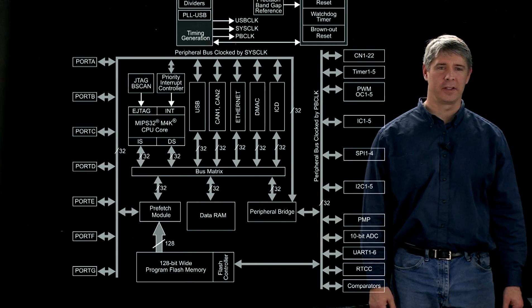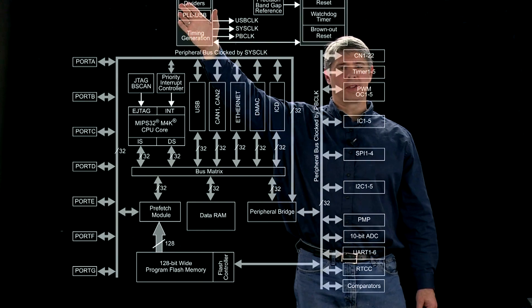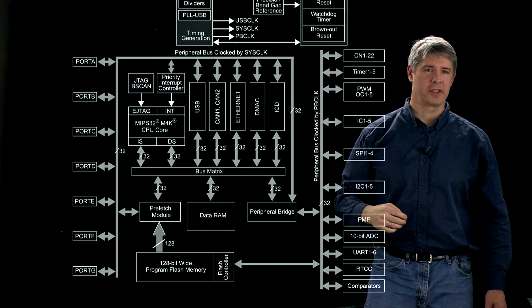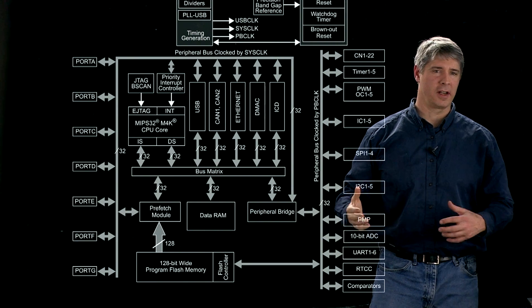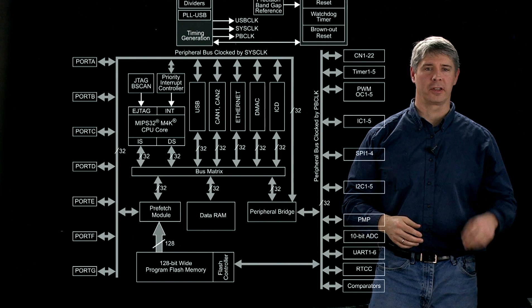This rather complicated diagram illustrates the PIC32 architecture. Up here at the top, is the timing generation circuit, which takes in a clock signal from some external crystal oscillator, and from that generates three other clock signals.